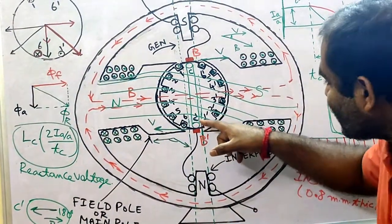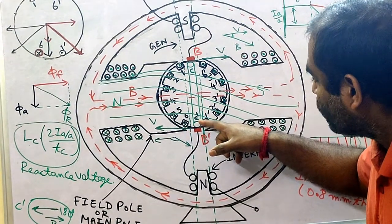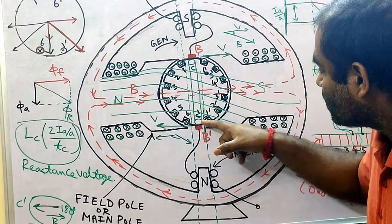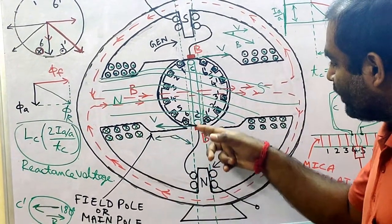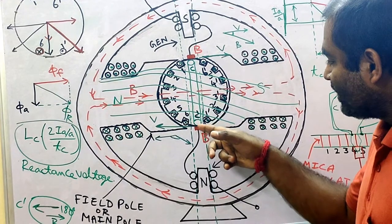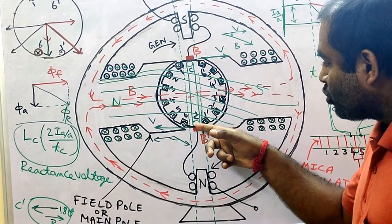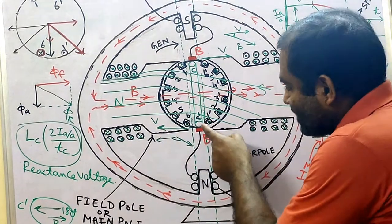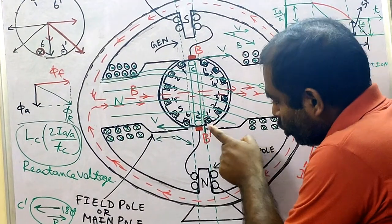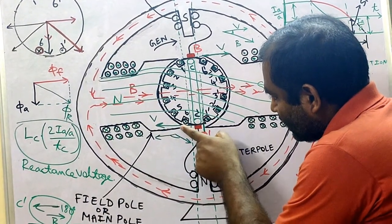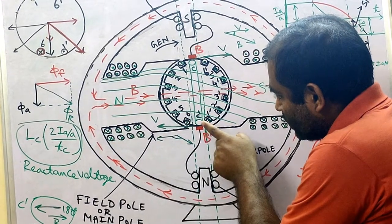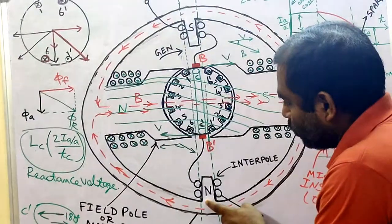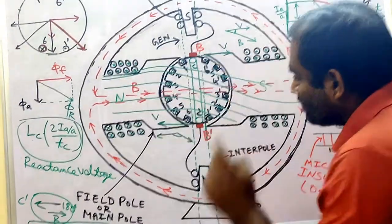So this interpole is a south pole, and obviously the other interpole will be a north pole. Applying the same logic: coil side C' is going to move to the position previously occupied by coil 6, where it will attain cross polarity. So this interpole should induce cross polarity in coil side C'. The interpole polarity is determined by what polarity the commutated coil needs to attain after commutation is complete.